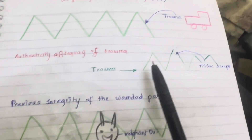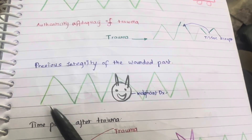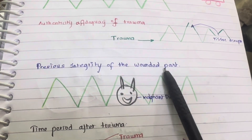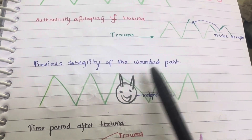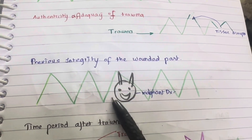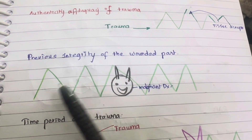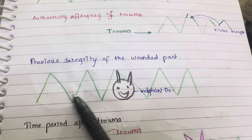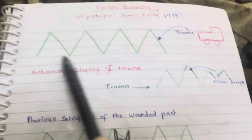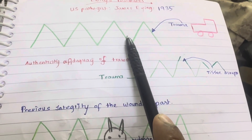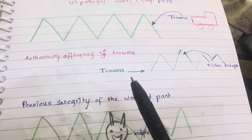Previous integrity of the wounded part: the part developing the malignant disease must have been normal prior to the trauma.